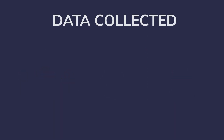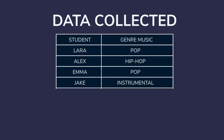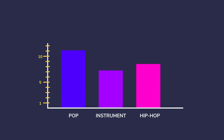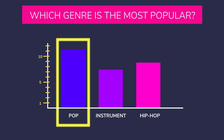Once you've collected answers, organize them into a simple table like this. You can then answer the question: which genre is the most popular? Now that was too easy — it's time to move on to experiments.